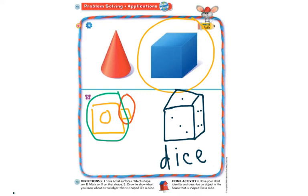Now I want you to also look around your house and see if you can find anything that is shaped like a cube. Remember, our cube has flat surfaces — six flat surfaces — and no curves. And that is our cube.